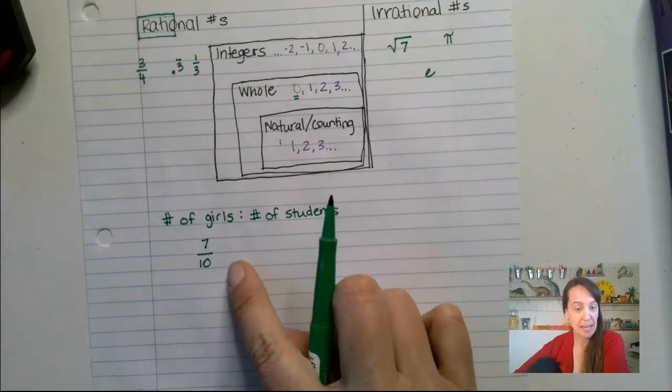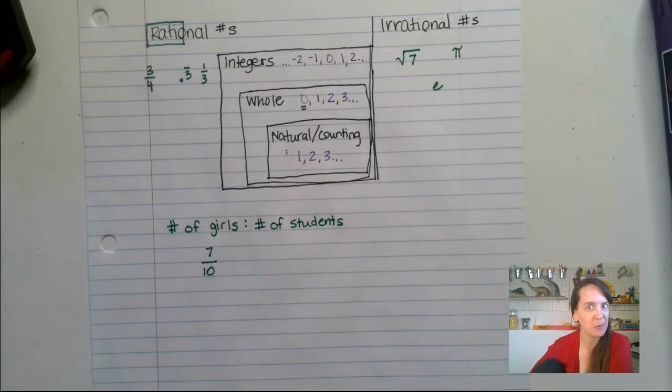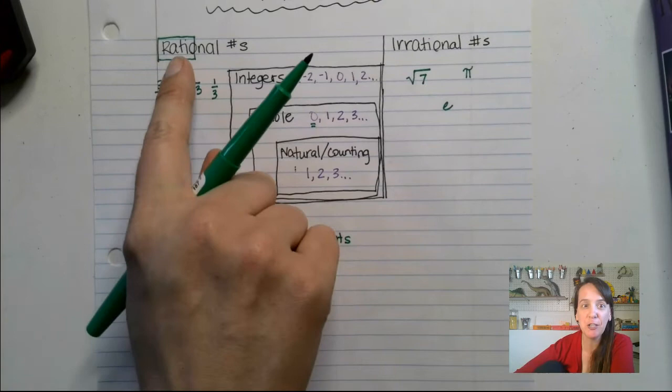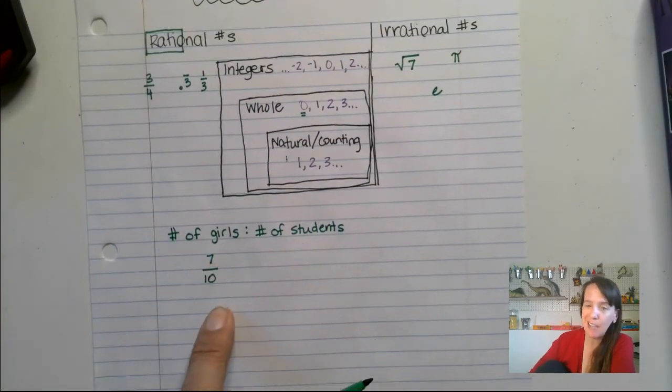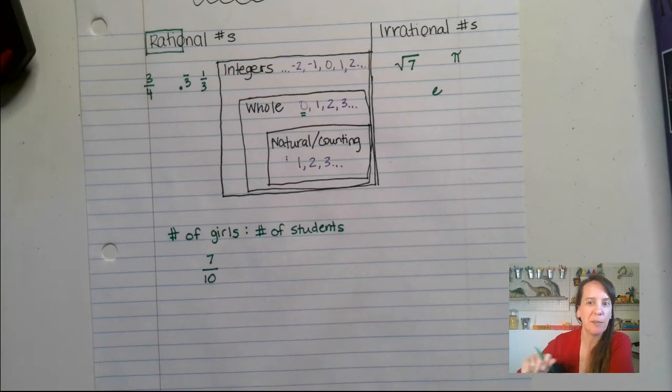and a fraction is just another way of writing a ratio, and a ratio is a rational number. So the number of girls to the number of students, that would be a rational number. Now let's talk about these individual parts.